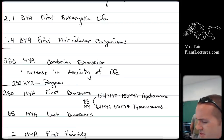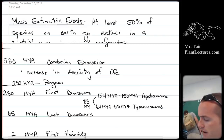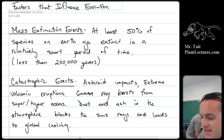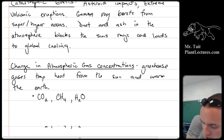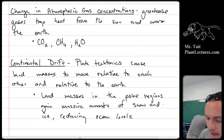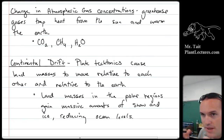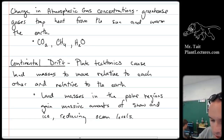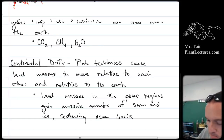Then we talked about the history of life — factors that influence evolution. Mass extinction events are really important because they open up ecological niches. Continental drift was really important because that's how all the species sort of started out with one common ancestor and then got branched to different continents.